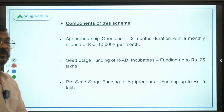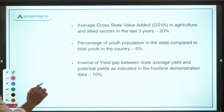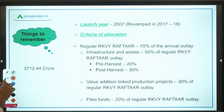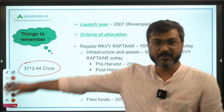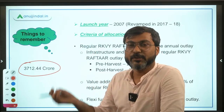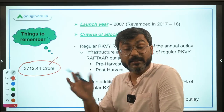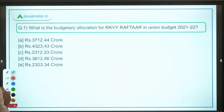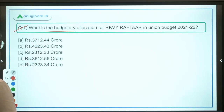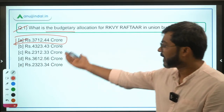Now some questions that can be asked in the exam from this scheme. One important point: the budgetary allocation for RKVY Raftar in Union Budget 2021-22 is Rs. 3712.44 crores. That is an easy question. Another question: how much percentage of fund is allocated to infrastructure and assets under RKVY Raftar? The total is 70% to Regular RKVY Raftar, and 50% of that 70% is for infrastructure and assets — so the answer is 50% of regular RKVY Raftar outlay.